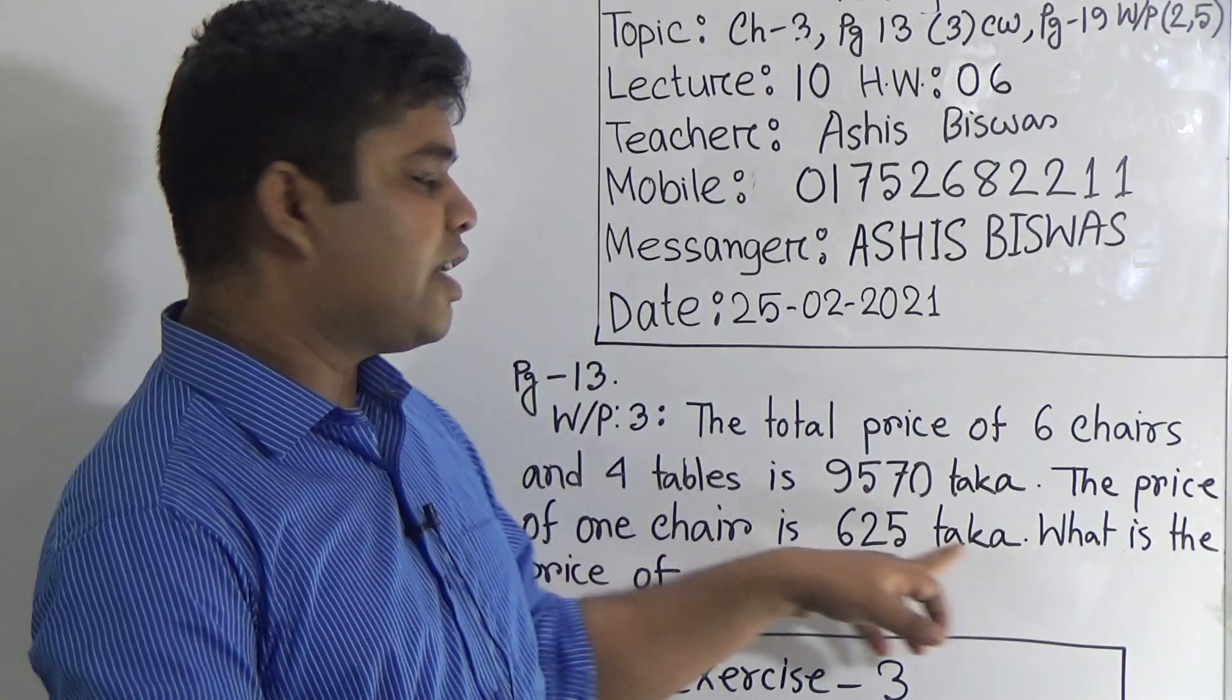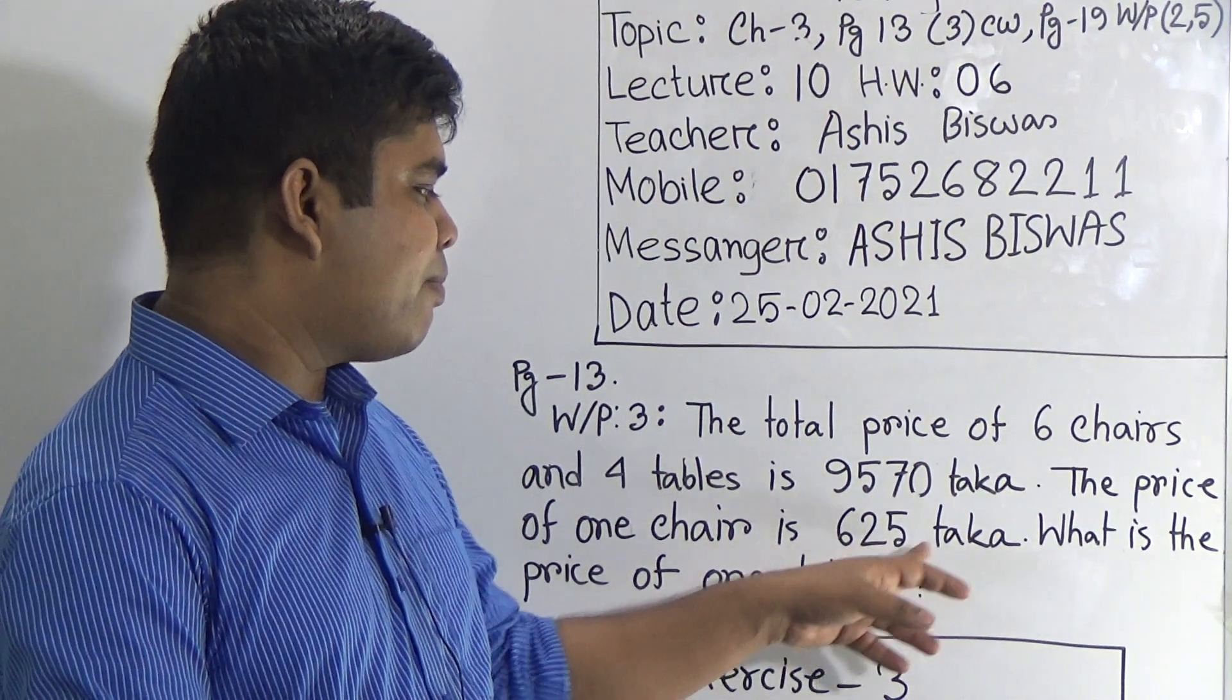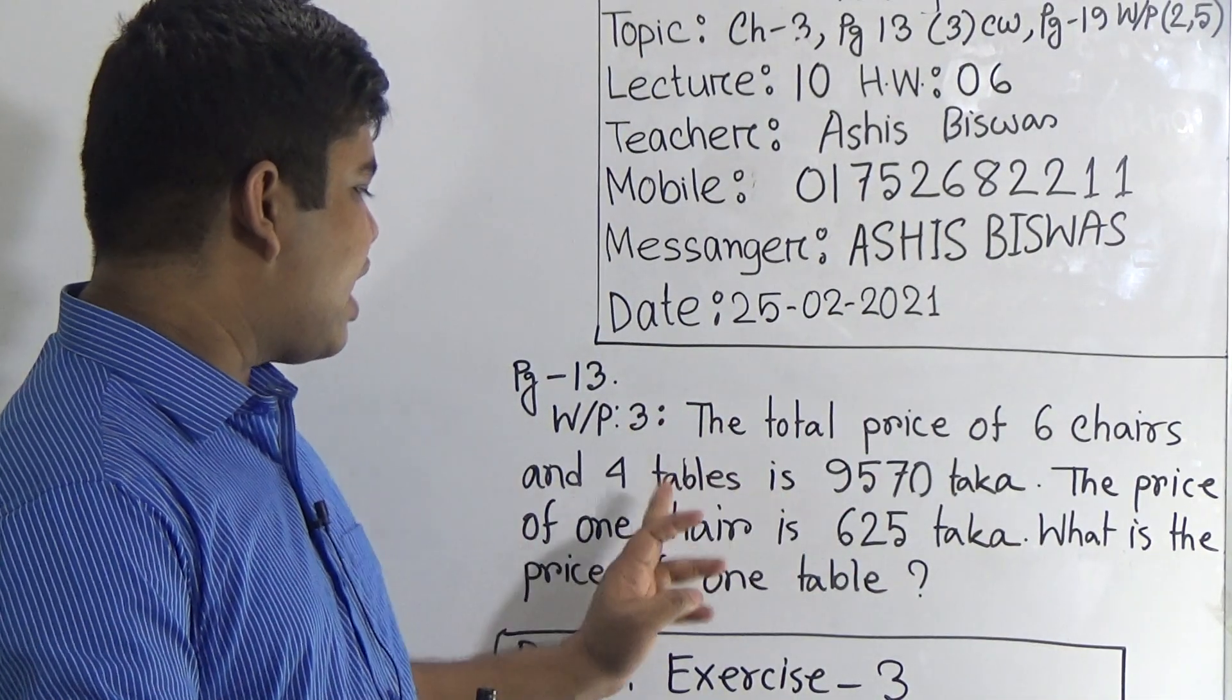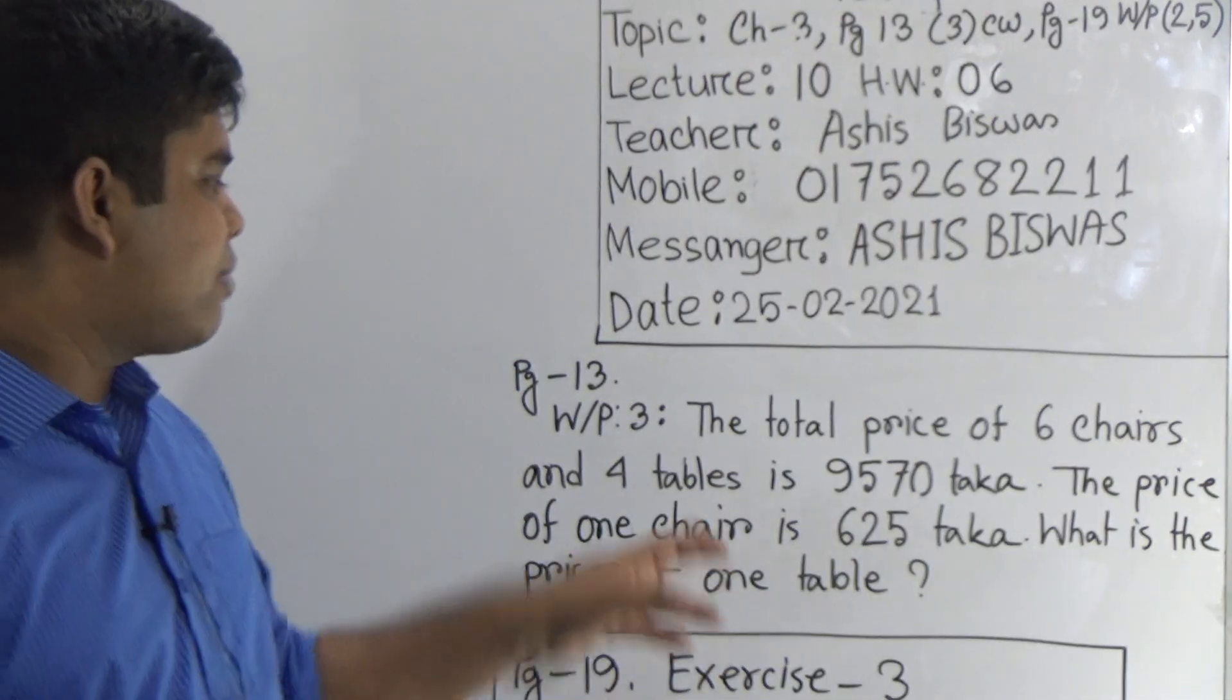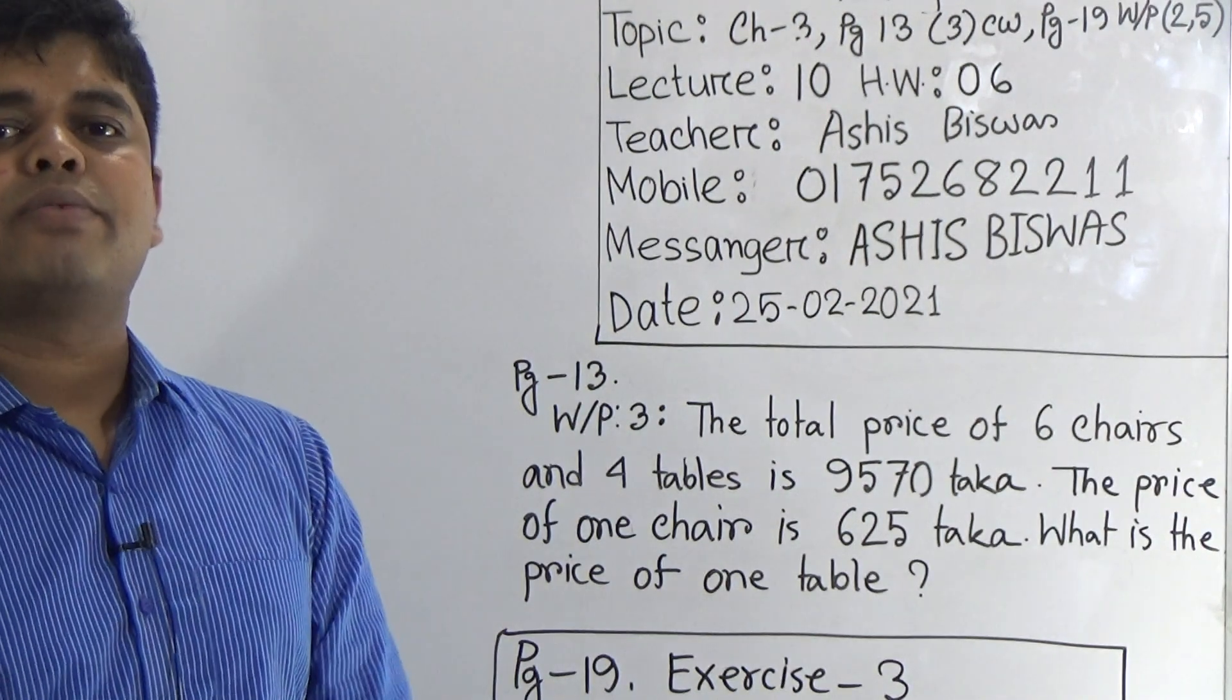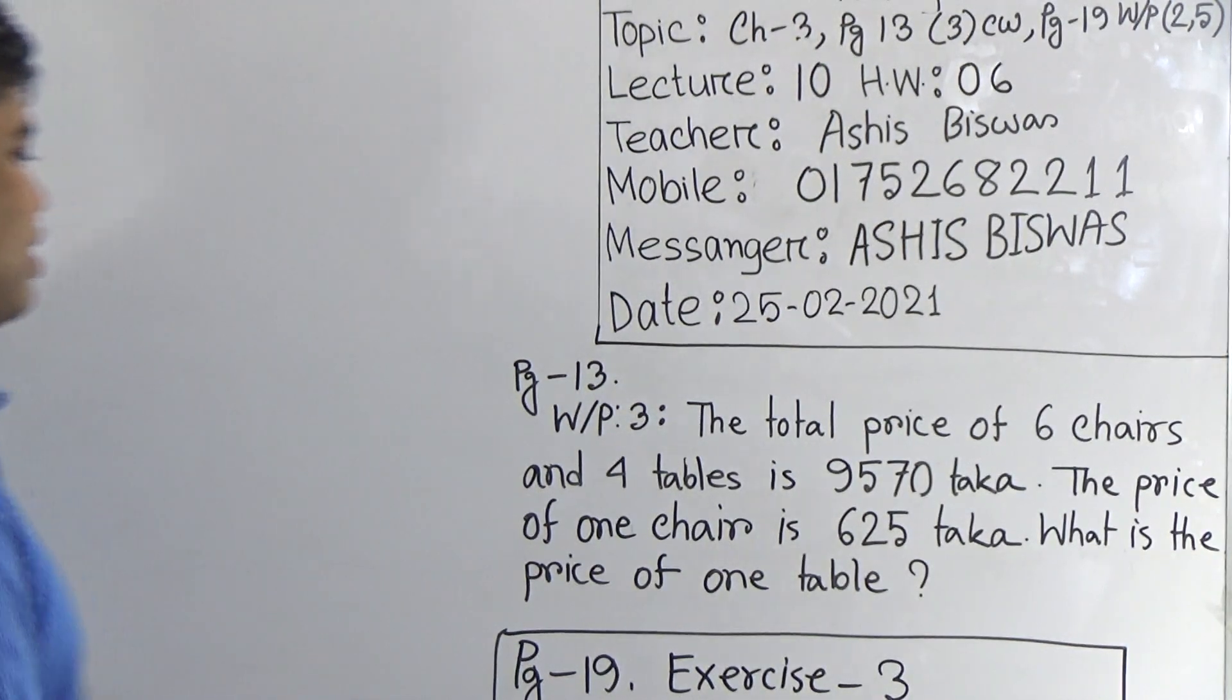So the price of one chair is 625 taka. So the price of 6 chairs is what? We multiply this 625 by 6 and we get a number. Now, from the total price of 6 chairs and 4 tables, we subtract the price of 6 chairs. Then we get the price of 4 tables. After that, from that 4 tables, we can easily find out the price of one table by dividing that number by 4. So let us try to solve this math. If we solve this math, then it is easier for you to understand.